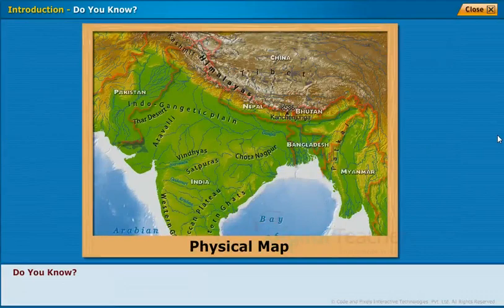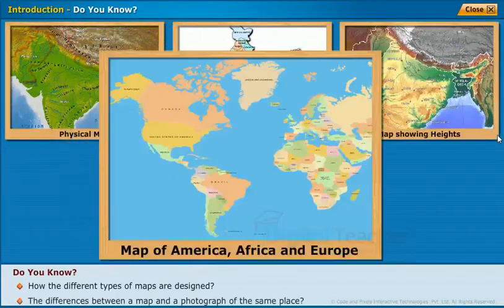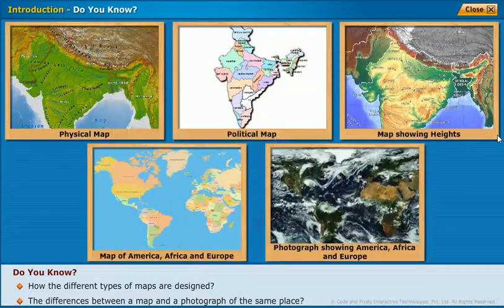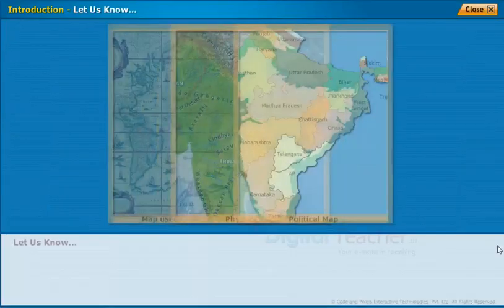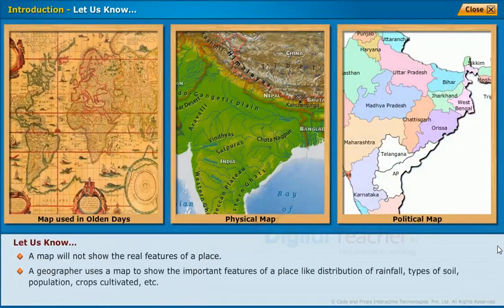Do you know how the different types of maps are designed, and the differences between a map and a photograph of the same place? A map will not show the real features of a place. A geographer uses a map to show the important features of a place, like distribution of rainfall, types of soil, population, crops cultivated, etc.